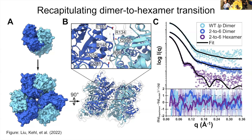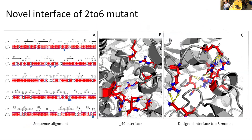Using size exclusion we were able to separate the two populations and get individual data points for each. Another interesting finding is that we didn't recreate the interface found on the known hexamer — we created a completely novel interface. We solved the crystal structure of the hexamer to get high-resolution atomic data to validate our models, and we can see a new possible interaction occurring that's mainly due to positioning a residue in the right location to form that new interaction.